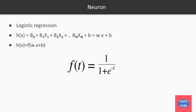Because we get the hypothesis as β0 plus b1·x1 plus b2·x2 plus bn·xn plus b, which is equal to w·x plus b. And the hypothesis is given by h(x) = f(w·x + b), and then we apply the sigmoid function on top of it.